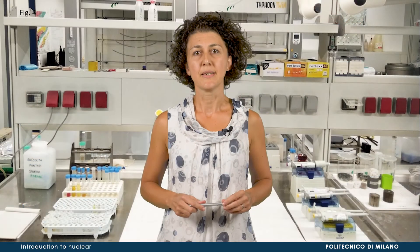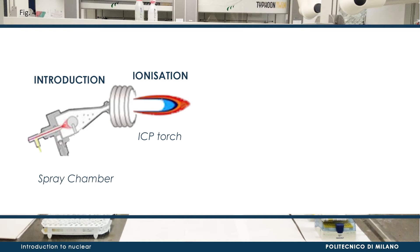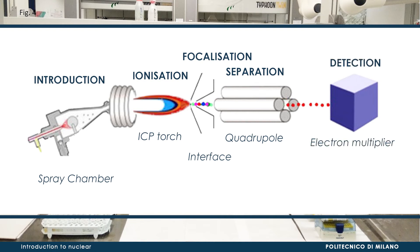The inductively coupled plasma mass spectrometer available in the lab enables analysis of a liquid sample by nebulizing it in a spray chamber. The atoms and molecules are ionized by the inductively coupled plasma torch. The ions are extracted and focused by ion-optic guides under vacuum, then separated according to mass-to-charge ratio by the quadrupole under high vacuum, and finally detected by a discrete dynode electron multiplier.